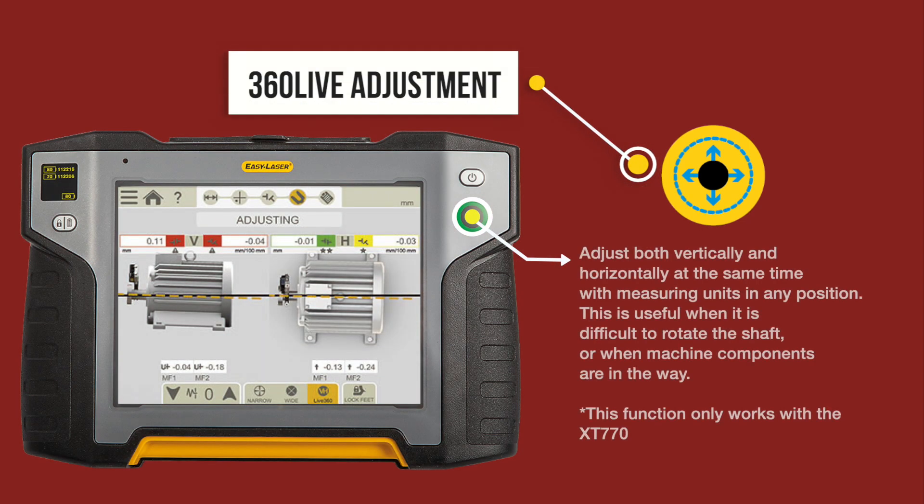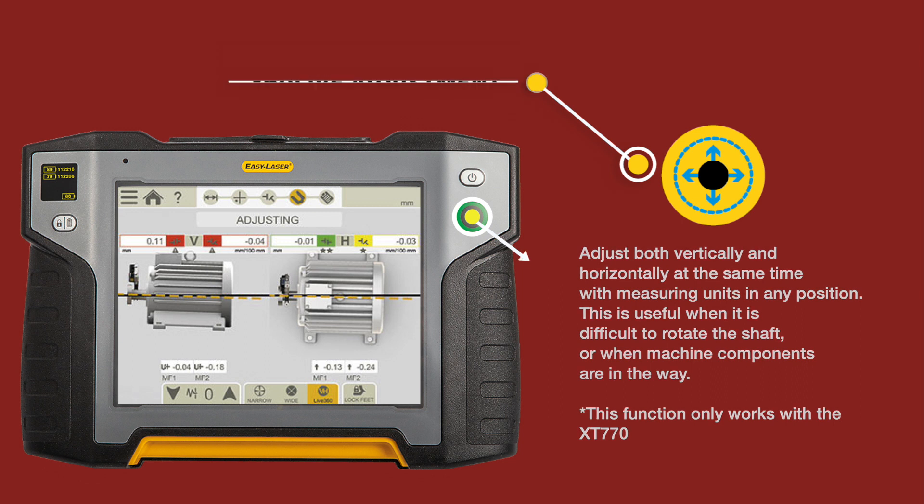360 live adjustment. Adjust both vertically and horizontally at the same time with measuring units in any position. This is useful when it is difficult to rotate the shaft or when machine components are in the way.